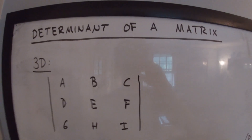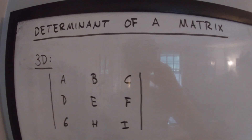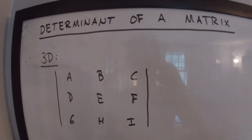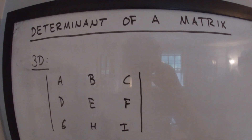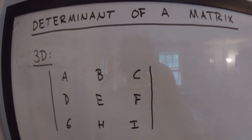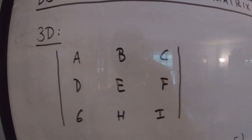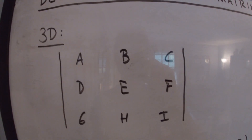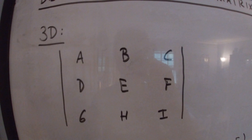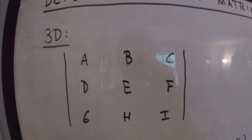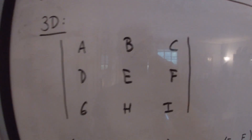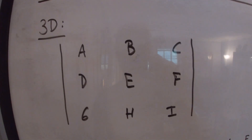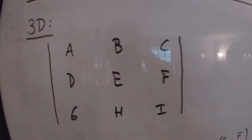In 3D, finding the determinant of a matrix is a little harder, but not too complex. We have a 3D matrix defined with A, B, C in the first row, D, E, F in the second row, and G, H, I in the third row — three rows and three columns.